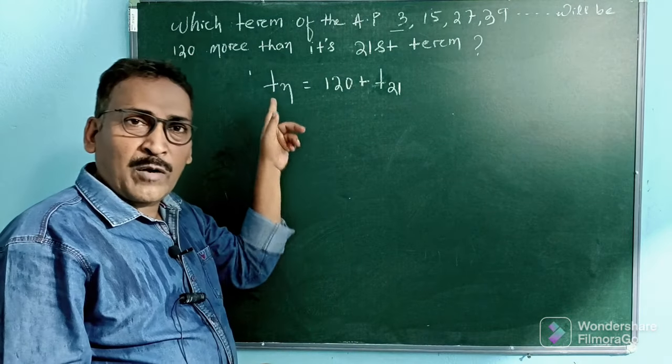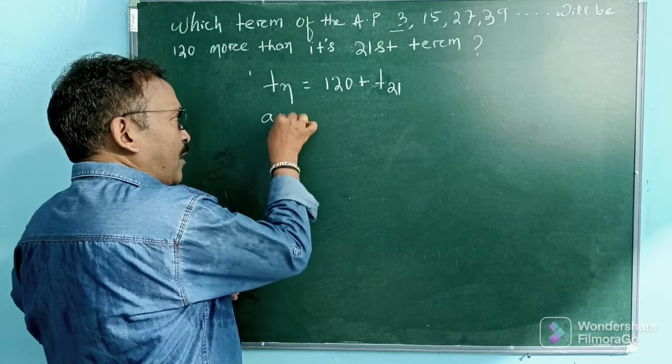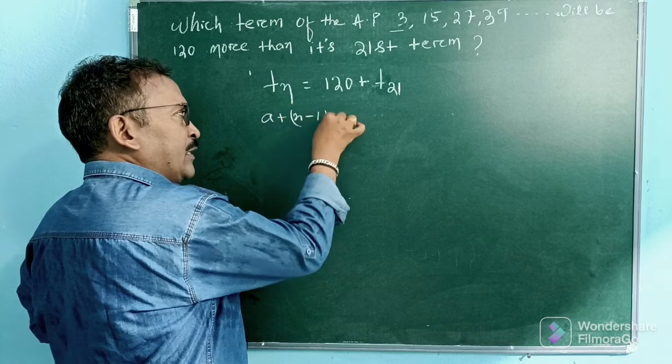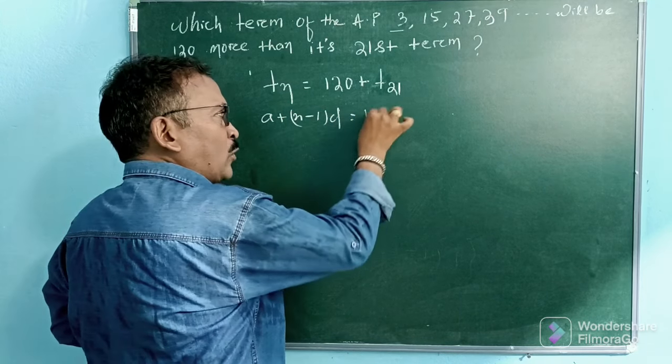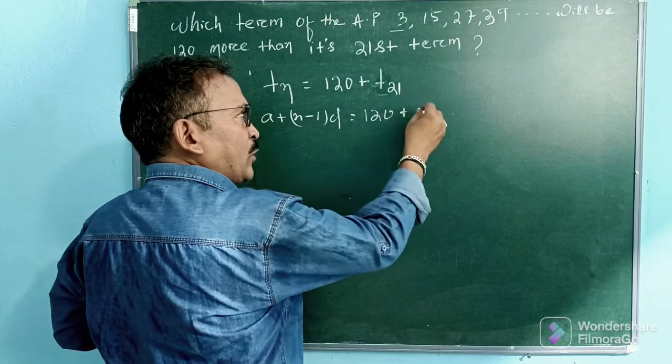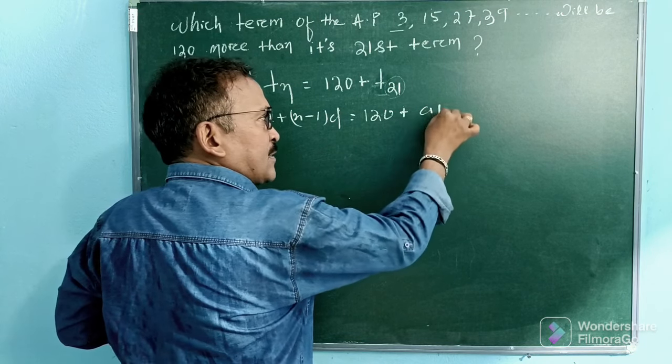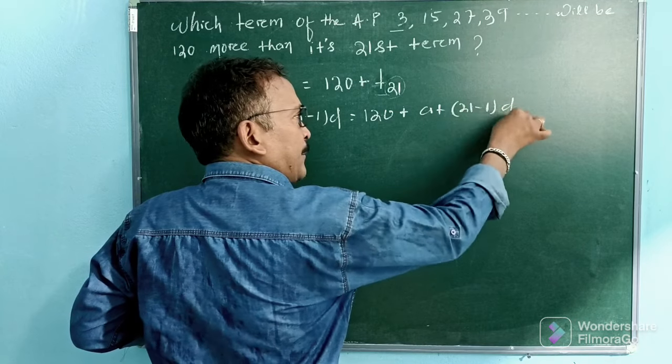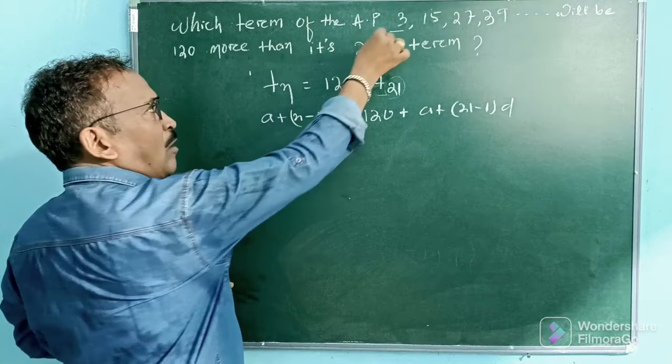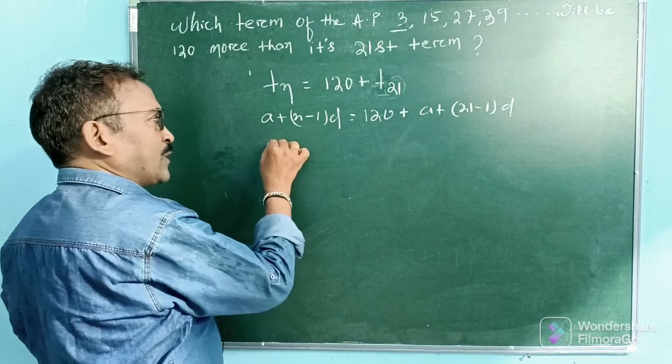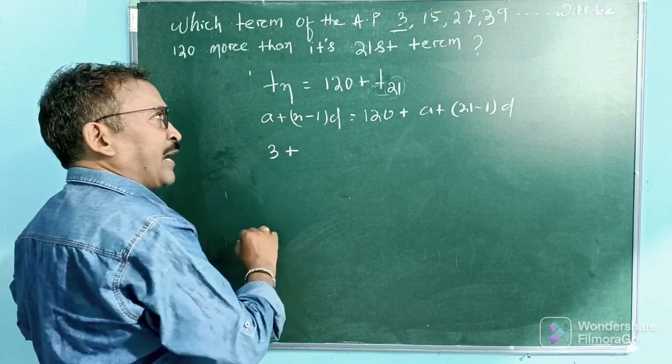So here we know that the formula for Tn is a plus (n-1)d. So here a is equal to how much? That is 3. And the value of d is 15 minus 3, that means 12.